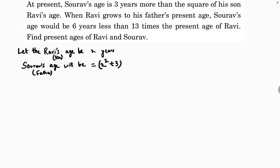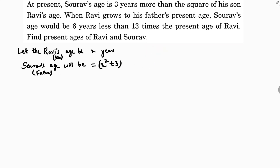When Ravi grows to his father's age — this part is slightly twisted. Suppose Ravi's age is 10 and the father's age is 40. When Ravi will become 40, the difference is 30. So Ravi's age will become 10 plus 30 because the difference is 30. So I will find the difference. When Ravi grows to his father's present age, that is after X squared plus 3 minus X years.